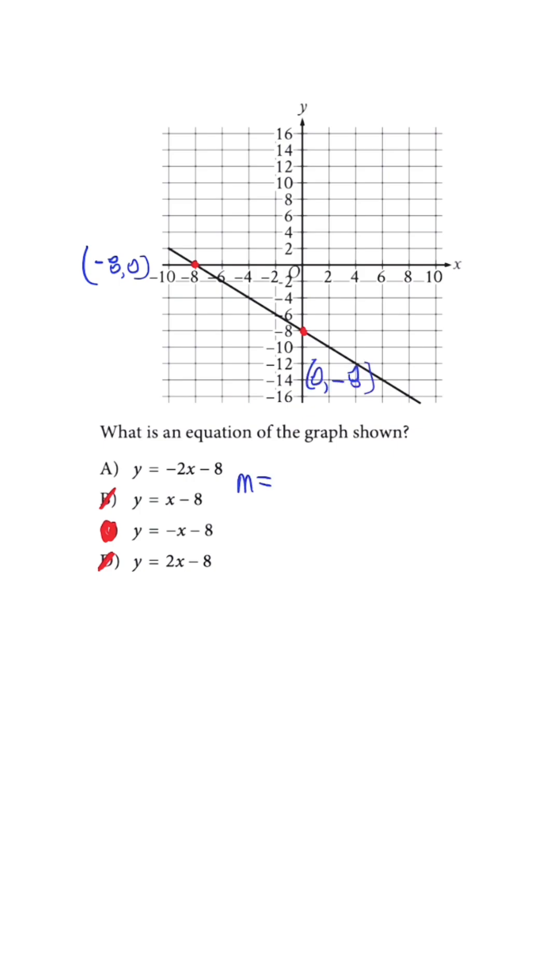So when we use the slope formula, we have negative eight minus zero over zero minus negative eight. So we're going to get M is equal to negative eight over eight, meaning that M is equal to negative one.